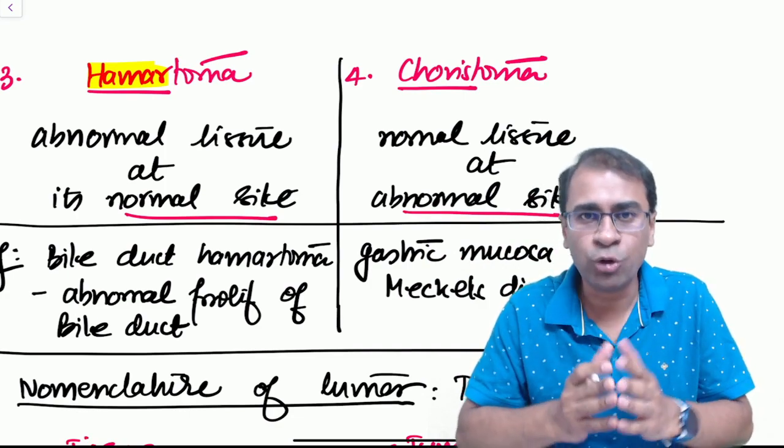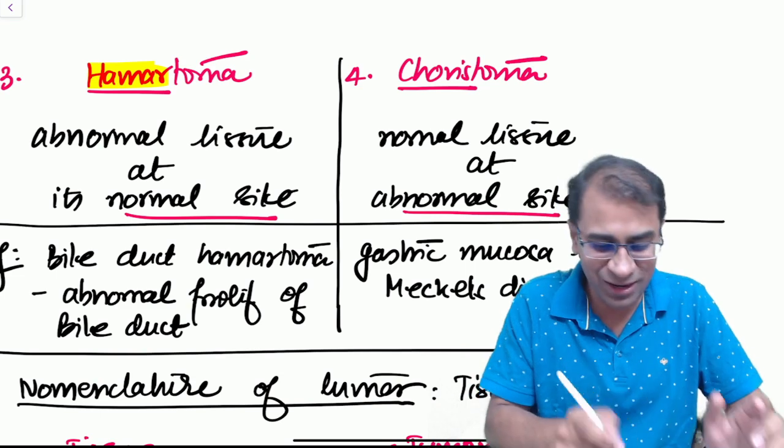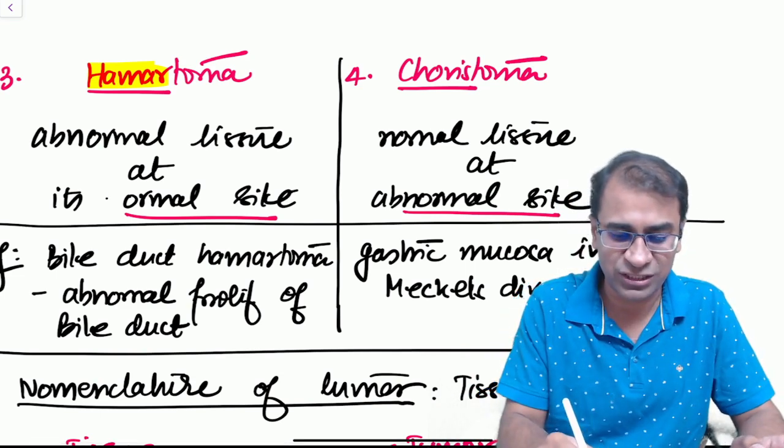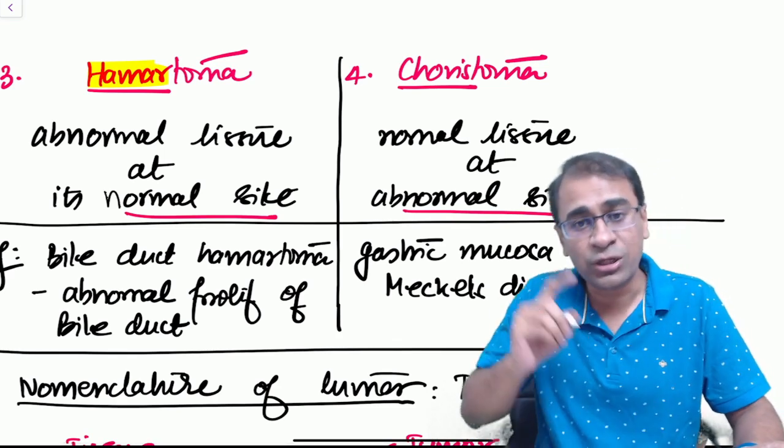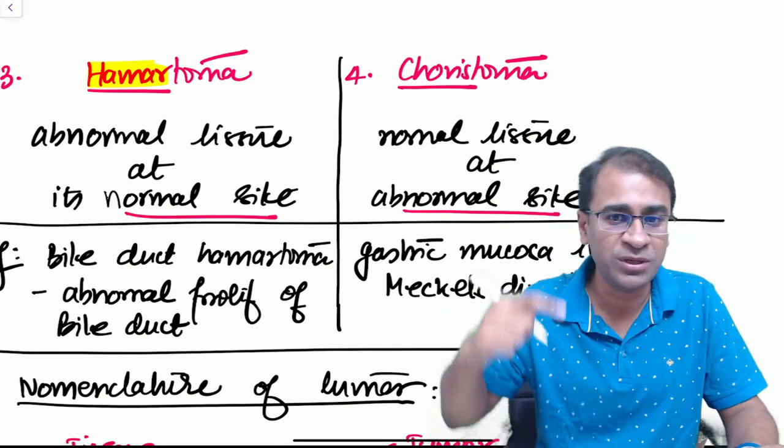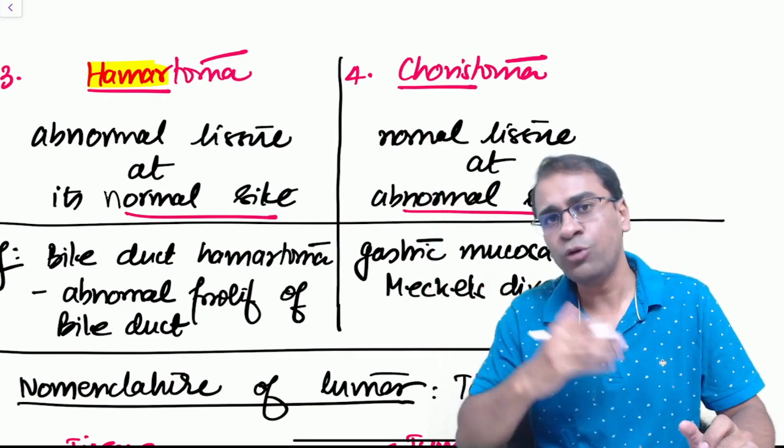Hematoma is hamartomatous tissue, meaning it's a normal tissue at an abnormal site. Choristoma is choristomatous tissue, meaning abnormal site but normal tissue. This is very important.